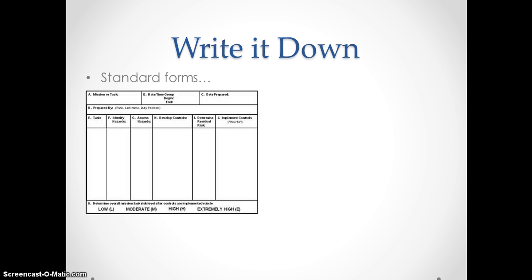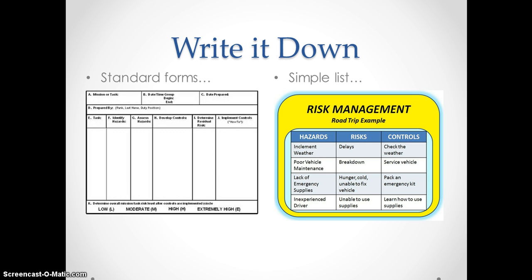Whatever the case, it's helpful to write things down. There may be standardized forms that you need to use in your risk management process. Here's an example of an Army risk management form. Or you might just make a simple list, as illustrated here — hazards, risks, controls — all in a nice grid that helps you refer back to what steps you've taken to protect yourself.